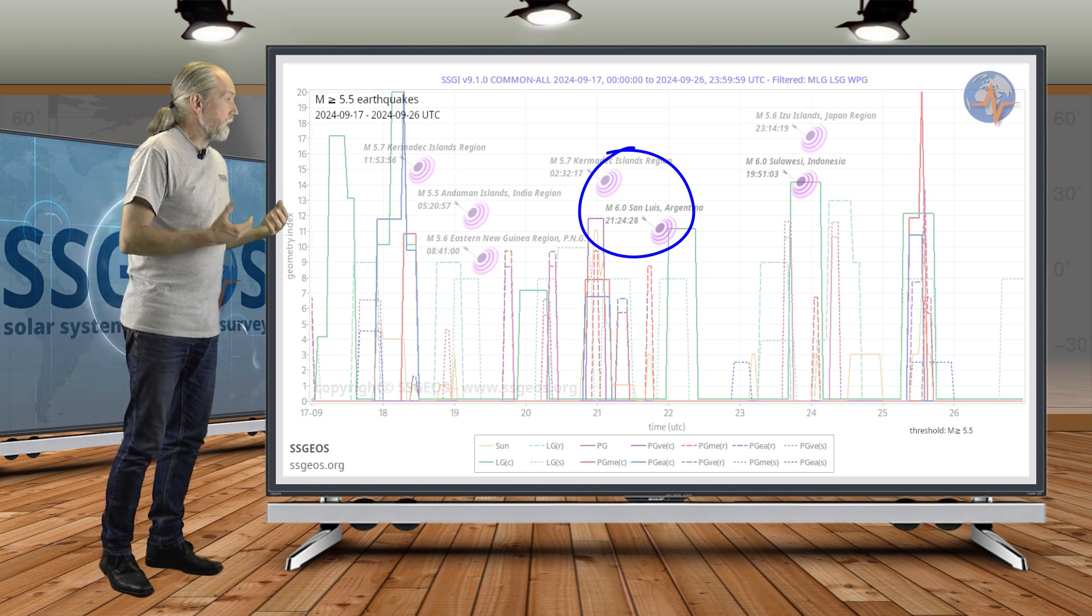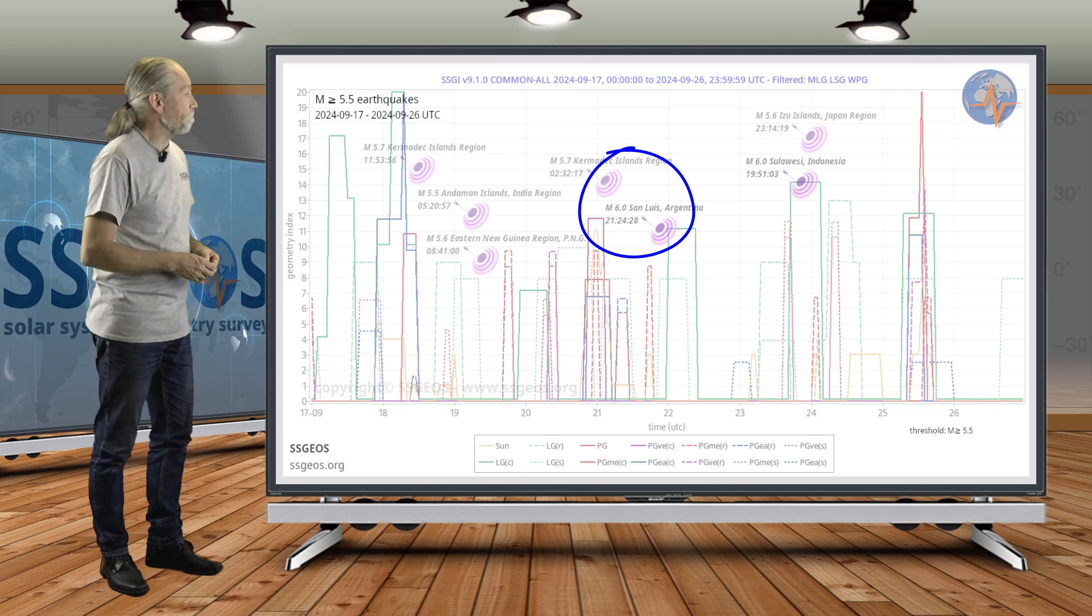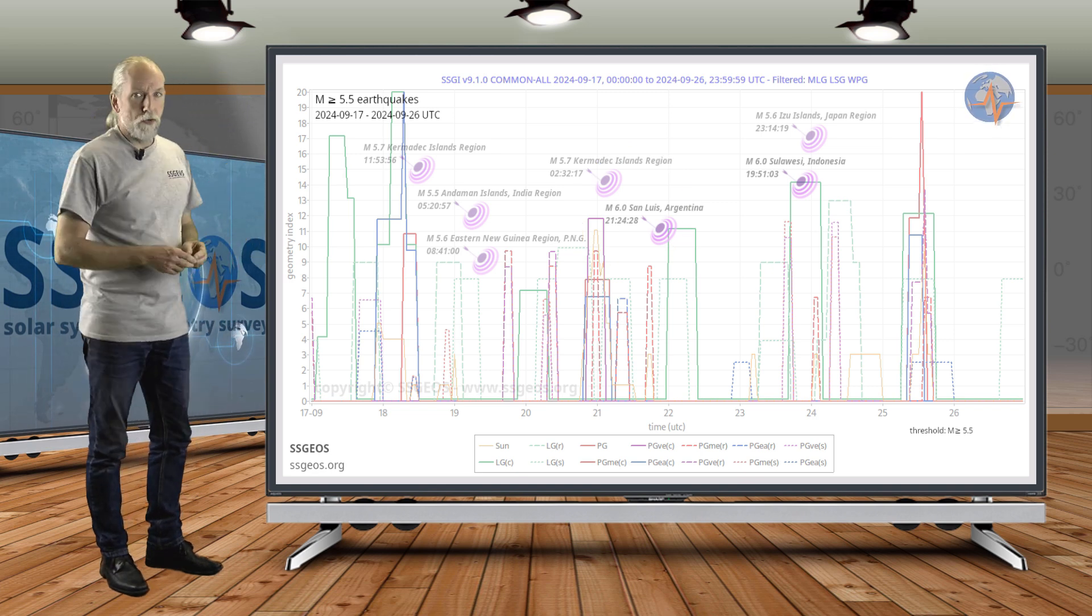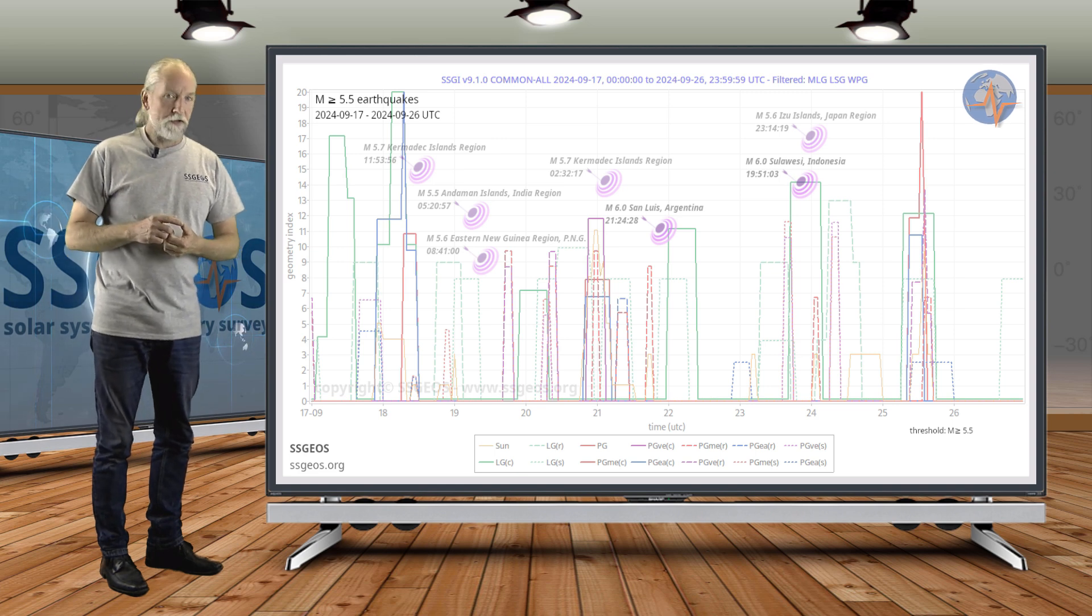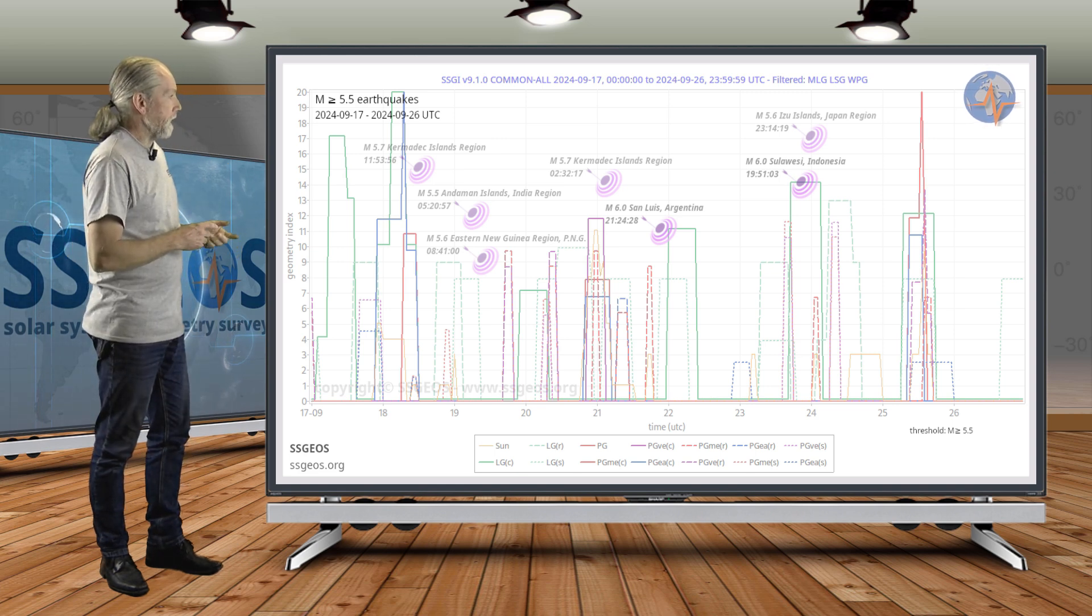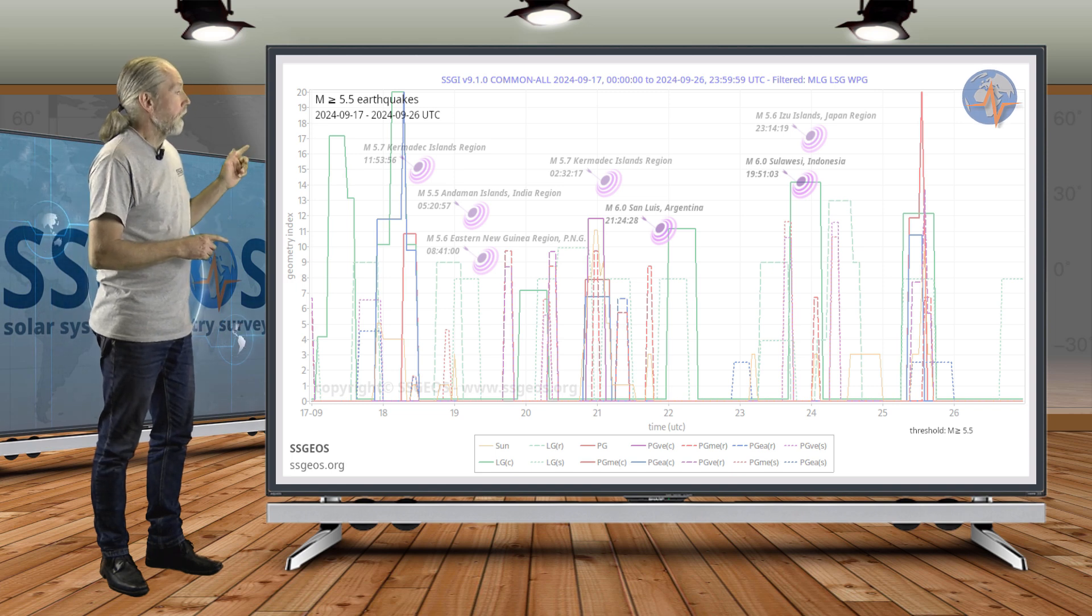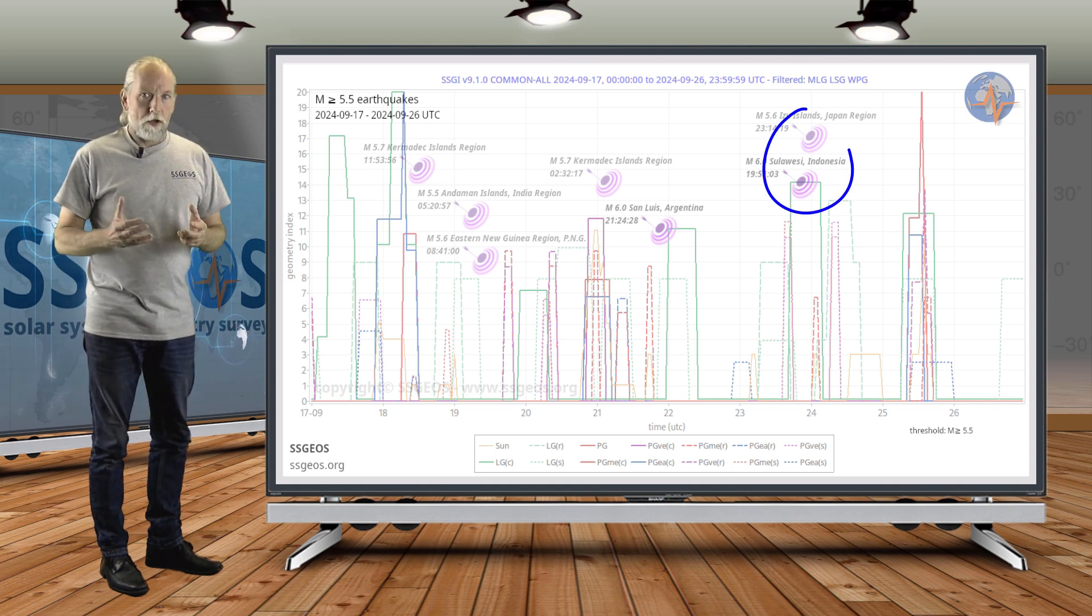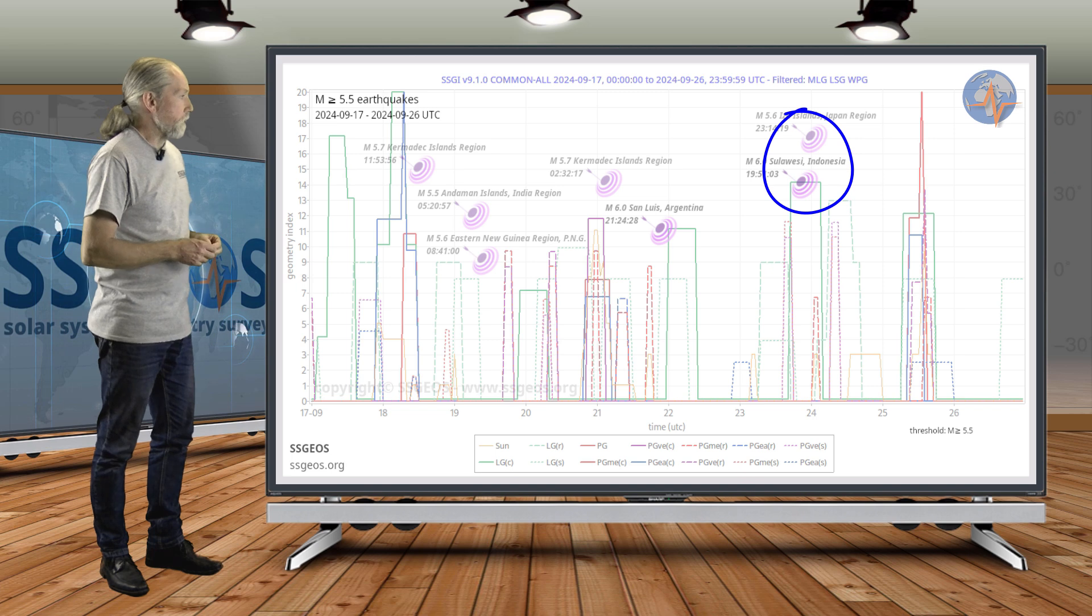Then we had two lunar conjunctions: one with Uranus on the 22nd and then with Jupiter on the 23rd. Again, we see minimal clustering peaking magnitude 6 at Sulawesi, Indonesia. So it wasn't all that much, but obvious seismic response nonetheless.